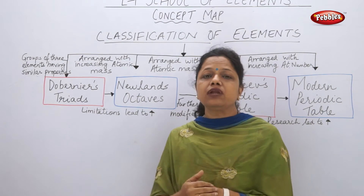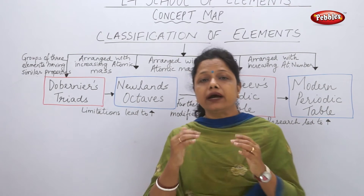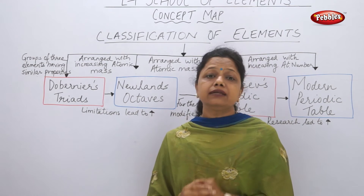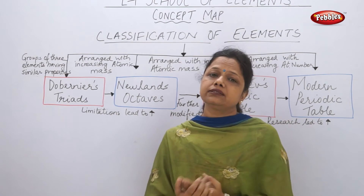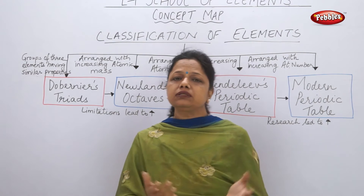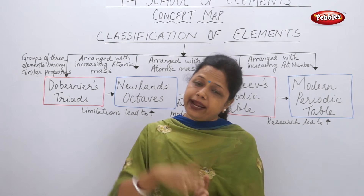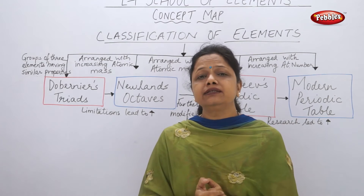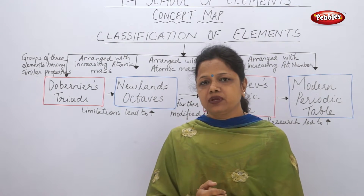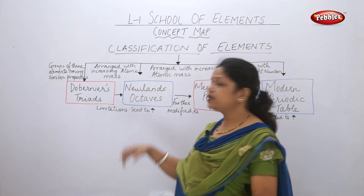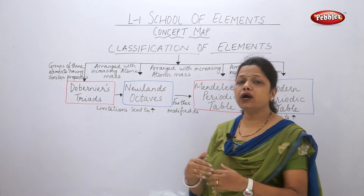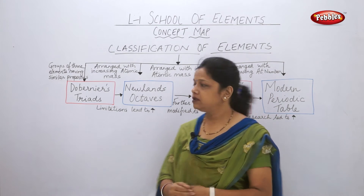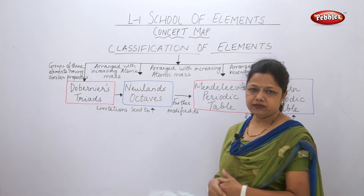Newland's Law of Octaves was partially successful, but it also had limitations. After calcium, he could not show that every eighth element had similar properties to calcium. These limitations of Newland's work led another scientist, Mendeleev, to discover something different.